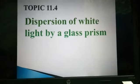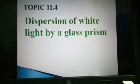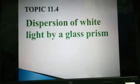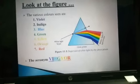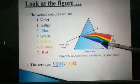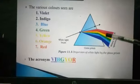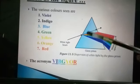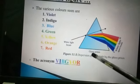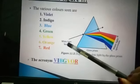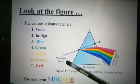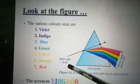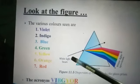White light means we are using sunlight, and a glass prism — you are already aware it is made up of glass. Look at this beautiful figure. You can compare this figure with which phenomena? Rainbow, right. Here this is the glass prism, and this white light beam means we are using sunlight.